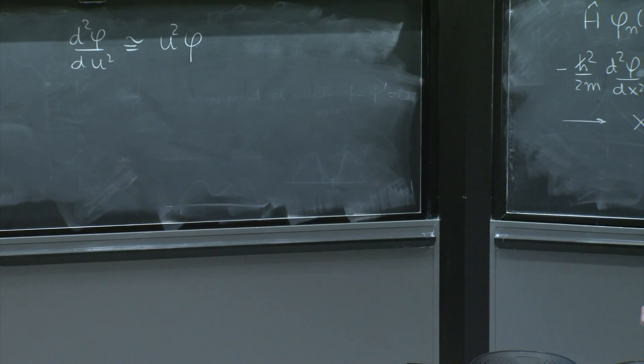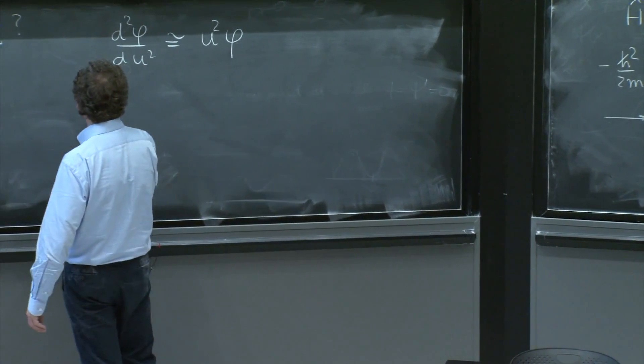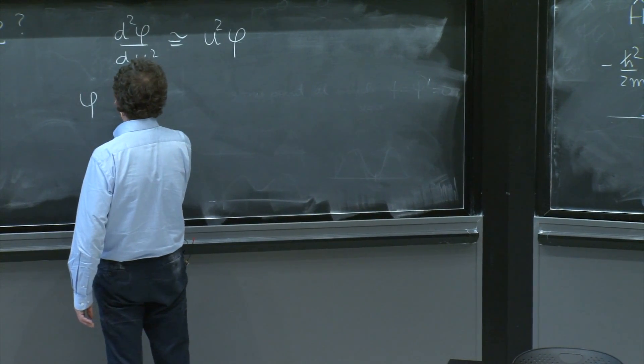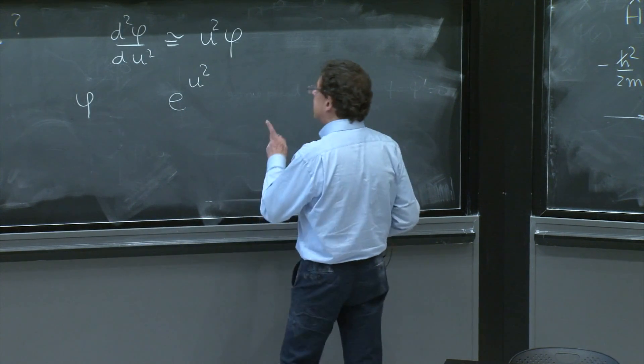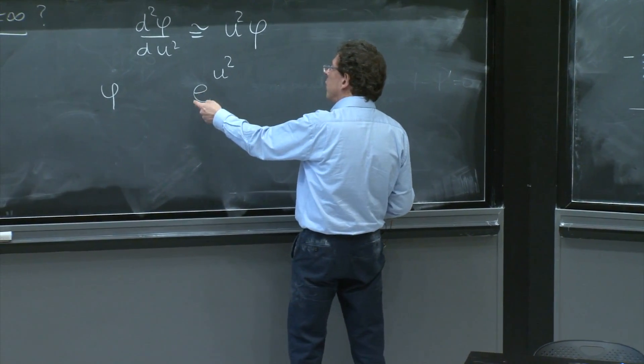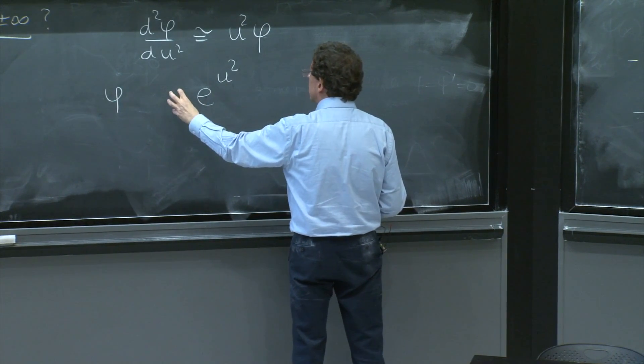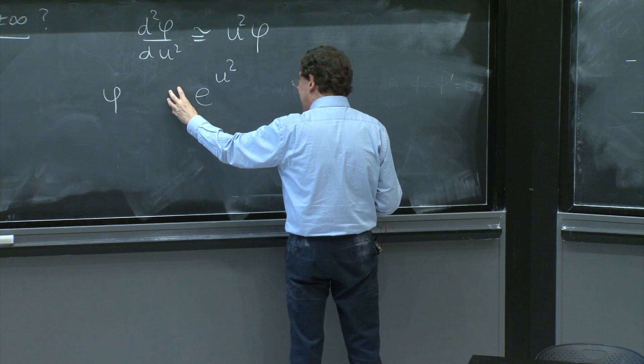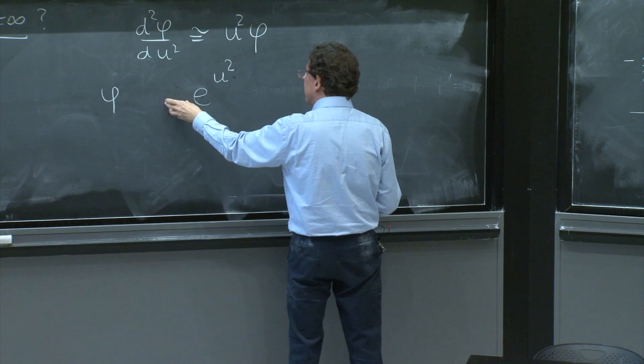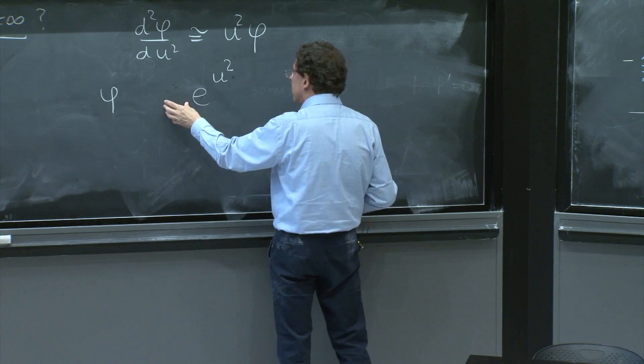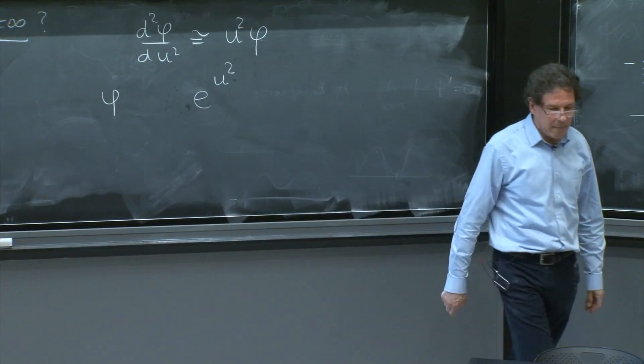So it has to be different. And what it should be is of the form e to the u squared. It's kind of like that. Because this is the function that when you differentiate, you bring down the derivative of this quantity, which is a u. When you differentiate again, you can bring another u to get a u squared, or you can differentiate this one. But if you differentiate the thing that is in the bottom, you get something that diverges less. So morally speaking, this function is about right.